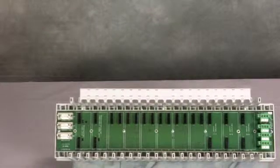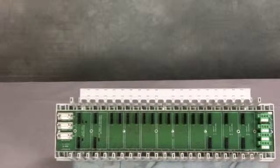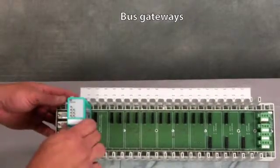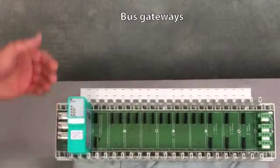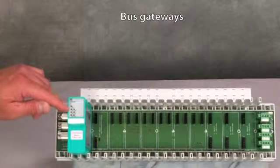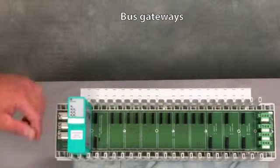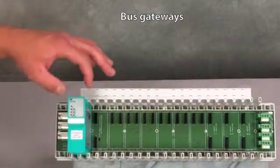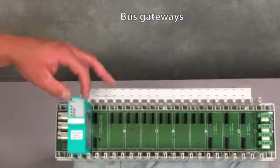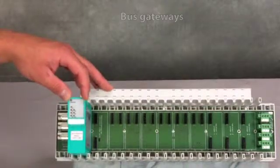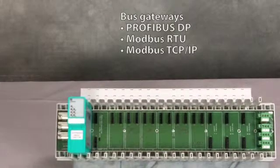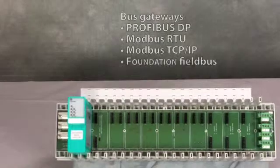The first item that you're going to choose once you've got your backplane is going to be your bus gateway or bus coupler. So in this case we have a PROFIBUS gateway and you can see all of the modules have LED indications and they're simple plug and play hot swappable modules. The different bus gateways that we have are PROFIBUS, Modbus RTU, Modbus TCP IP and Foundation Fieldbus.